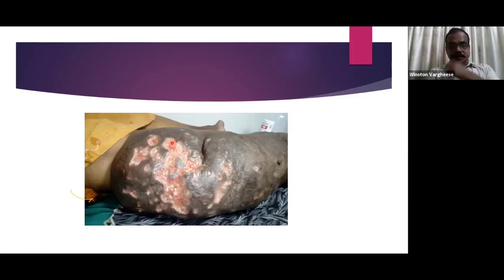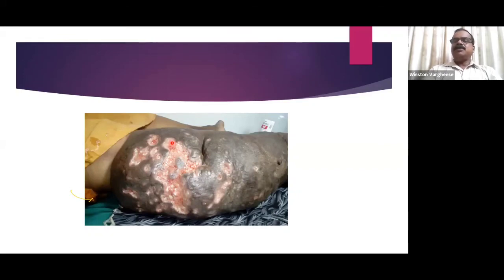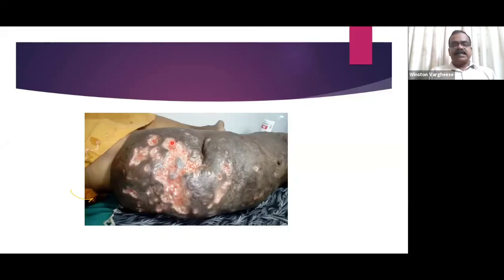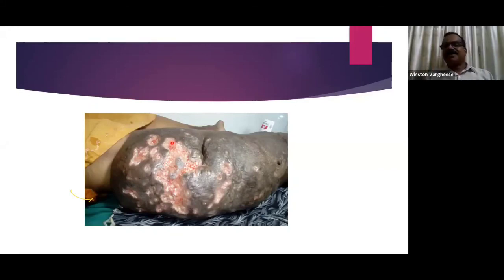One day, the intern mentioned that this lady was advising her to go for a love marriage. On inquiry, the doctor learned that this lady herself had eloped with a carpenter from a different and lower caste, coming from a high-class family. This key piece of personal history — grief from a suppressed emotional background — led the doctor to consider Natrium muriaticum for the case.